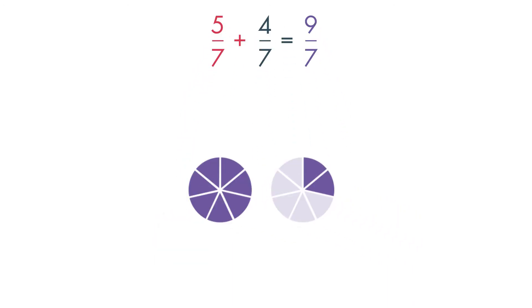Notice that the fraction nine-sevenths is greater than one whole. The fraction seven-sevenths equals one whole. Nine-sevenths is equal to one whole and two-sevenths. So, nine-sevenths can also be written as one and two-sevenths.